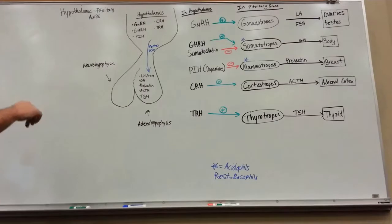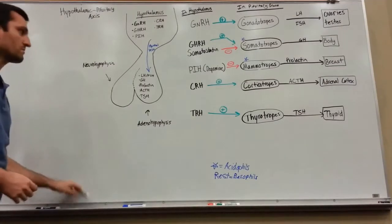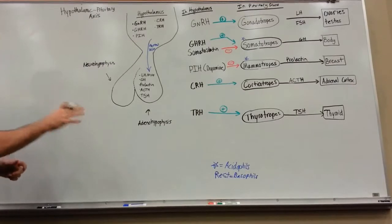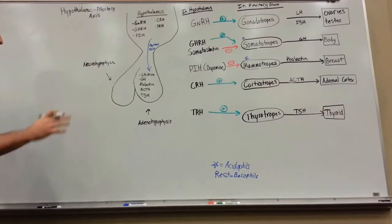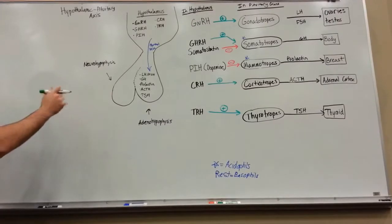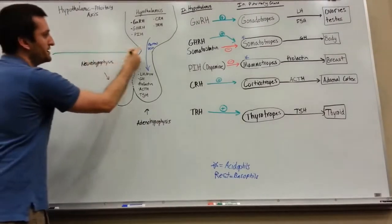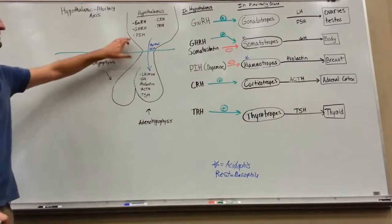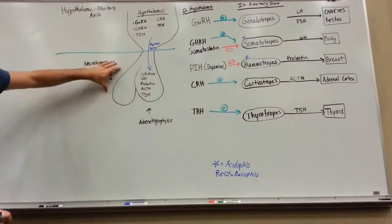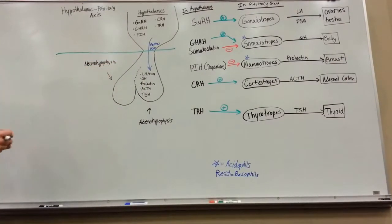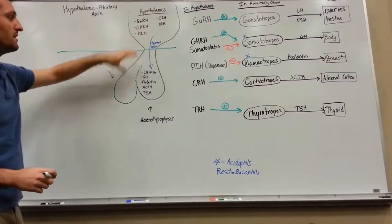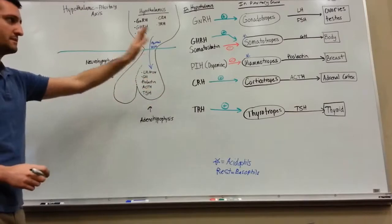One clinical correlation: let's say you're a motorcyclist and you get in a crash, fall off, and hit your head against cement. That can cause trauma to the brain and could also shear your infundibulum, also known as your stalk, separating your hypothalamus from your pituitary gland.